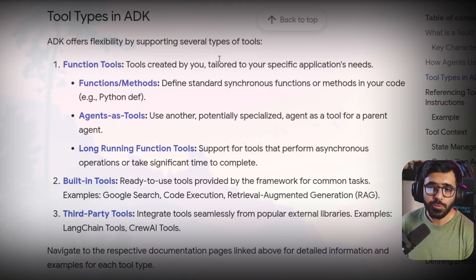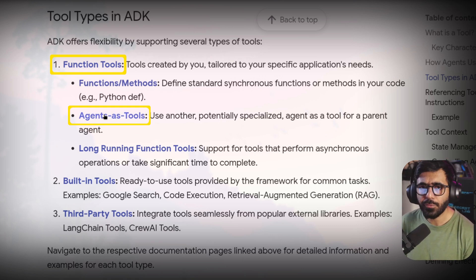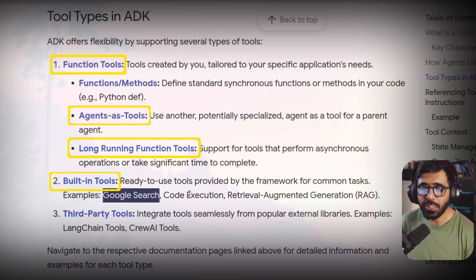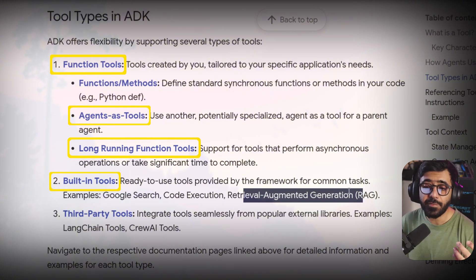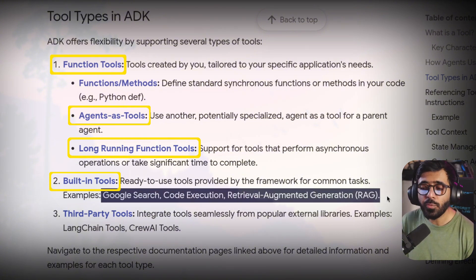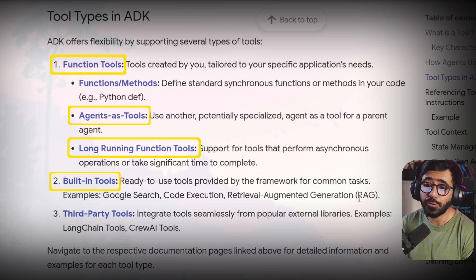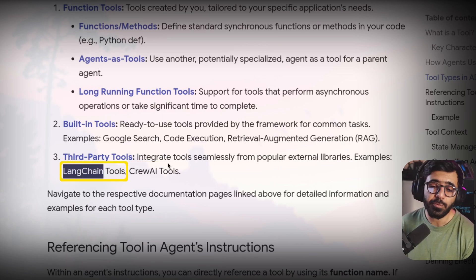Now a quick look at what kinds of tools we have. We have function tools that we can create as custom functions. We can also use agents as tools, and we can have long-running functions as well. Then we have built-in tools like Google Search, code execution, and retrieval augmented generation already built into the agent development kit. However, these are only usable by the Google model. And we can of course use things like CrewAI or LangChain tools as third-party tools as well.